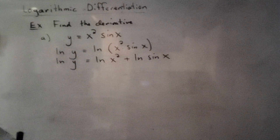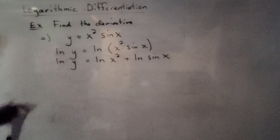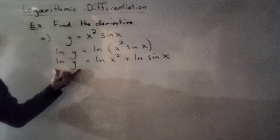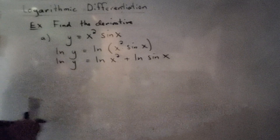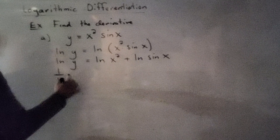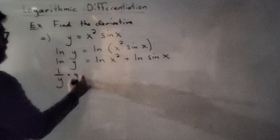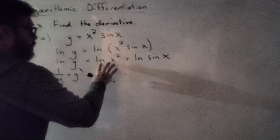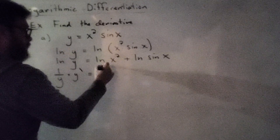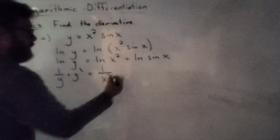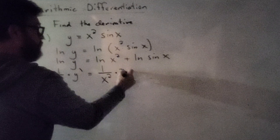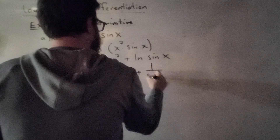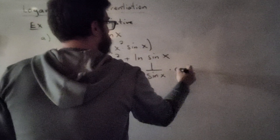Now comes the calculus — we're going to take the derivative of both sides. On the left-hand side, you'll need implicit differentiation because the expression has the dependent variable y. The derivative of the natural log of y is 1 over y times y prime. On the right side, the derivative of the natural log of x squared is 1 over x squared times 2x. Plus, the derivative of natural log of sine of x is 1 over sine of x times cosine of x.